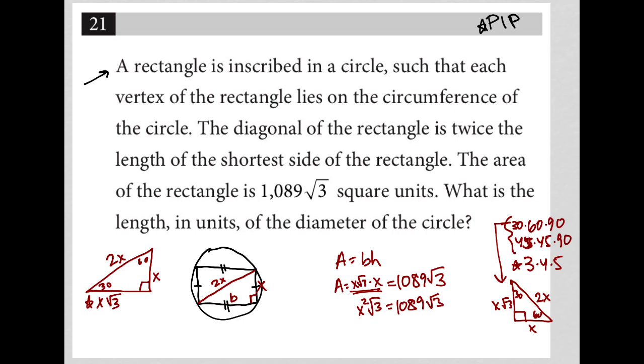Let me just keep reading and make sure: what is the length in units of the diameter of the circle? Yes, I'm trying to solve for 2X, so I need to find out what X is. In my effort to figure out what X is, I'm going to isolate X by dividing by √3 on both sides.